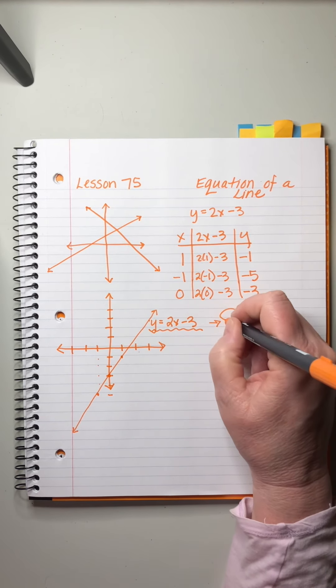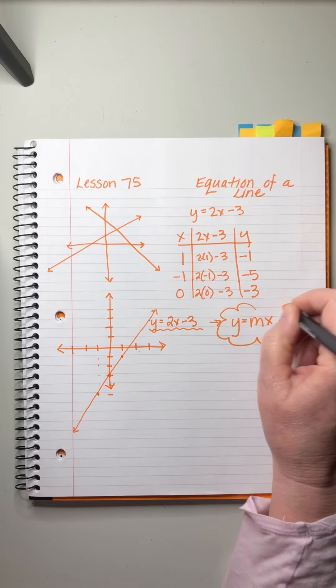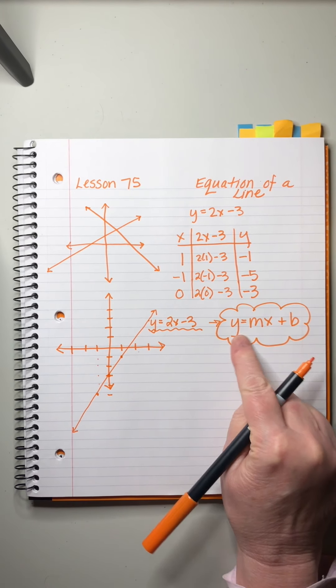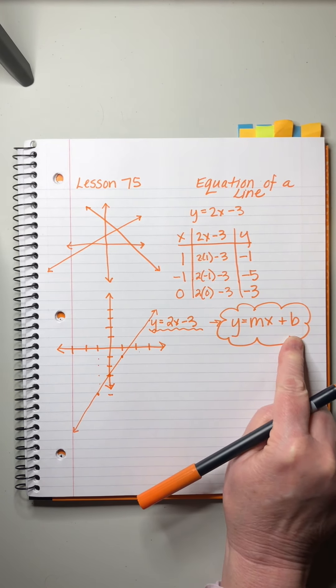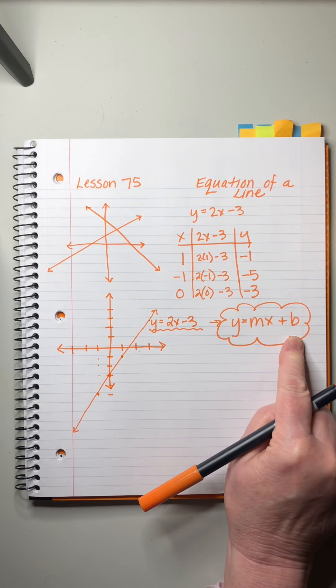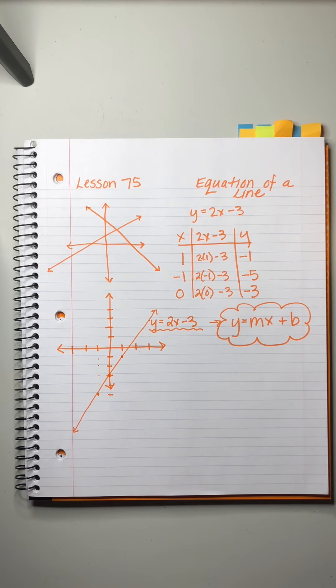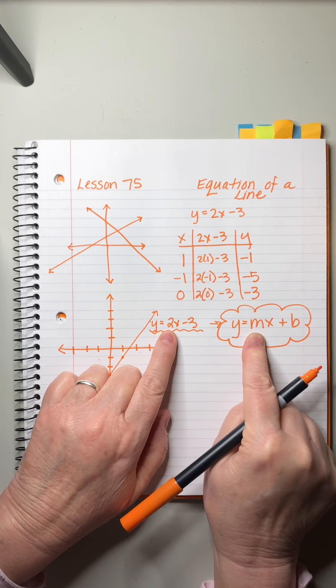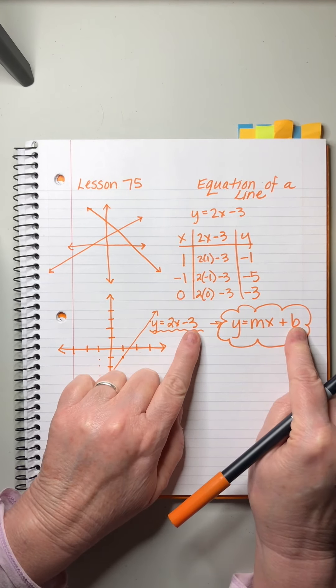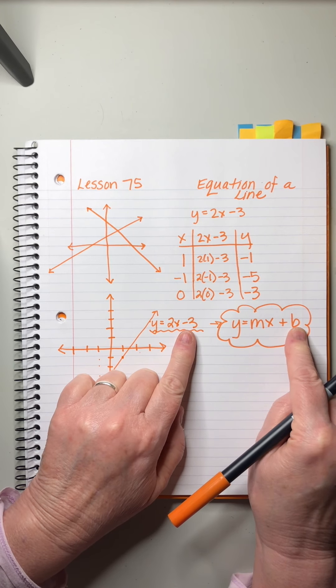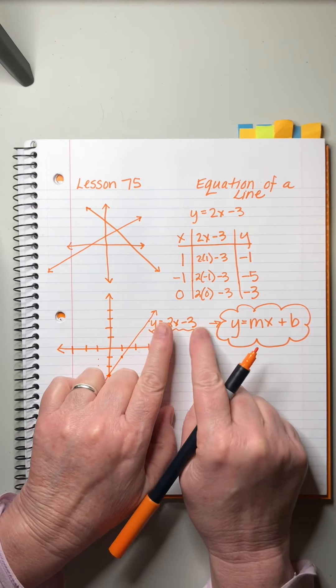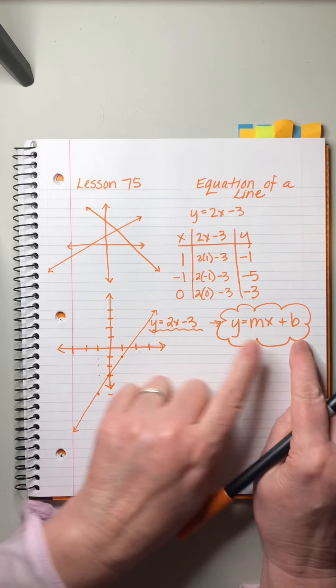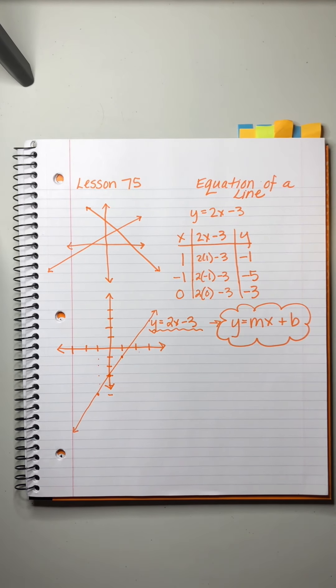And here it is, the Holy Grail. y equals mx plus b. That is the generic form of the equation of a line. It's technically called slope-intercept format for reasons that will become really obvious. But we're going to learn how to... And in this example, m, our slope, was 2. And b, our y-intercept, was negative 3. I'm going to explain those words in more detail. But that's how it works in a practical situation. We have numbers for m and b.